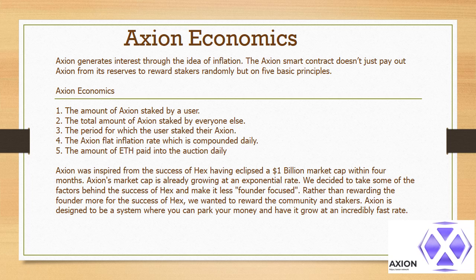Axion economics: Axion generates interest through the idea of inflation. The Axion smart contract pays out based on 5 basic principles: 1) The amount of Axion staked by a user. 2) The total amount of Axion staked by everyone else. 3) The period for which the user staked their Axion. 4) The Axion flat inflation rate, which is compounded daily. 5) The amount of ETH paid into the auction daily.